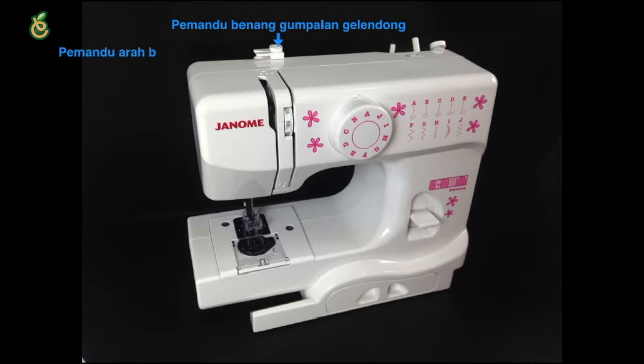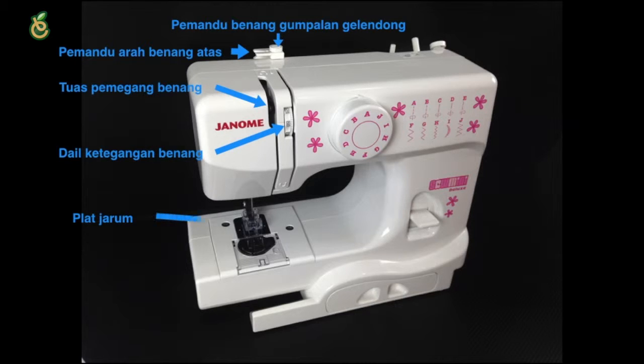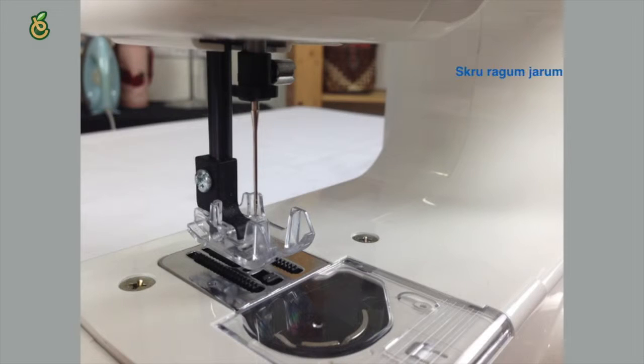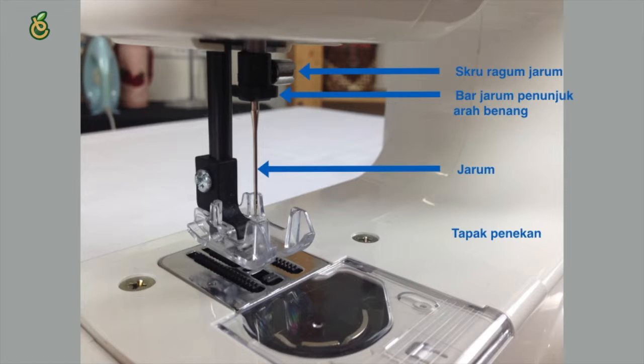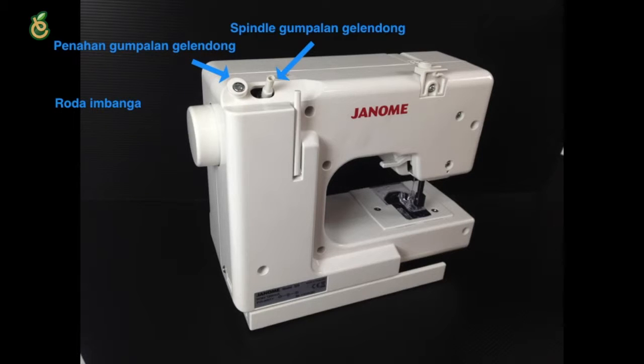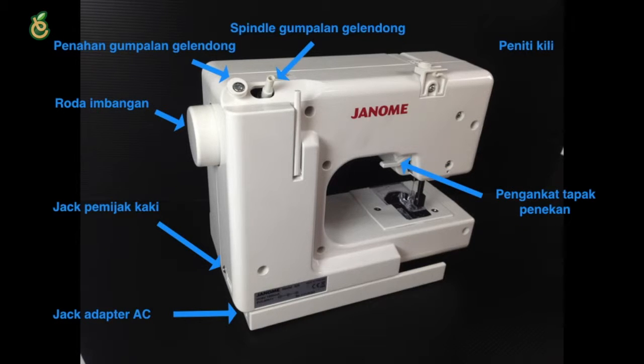Bobbin winding tension disc, upper thread die, thread take-up lever, thread tension dial, needle plate, hook cover plate, reverse stitch lever, stitch selector. Needle clamp, needle bar thread guide, needle, presser foot and set screw. Bobbin winder spindle, bobbin winder stopper, hand wheel, foot switch jack, AC adapter jack, presser foot lifter, and spool pin.